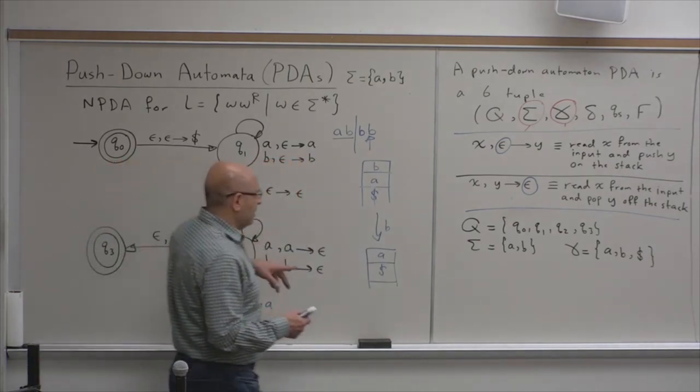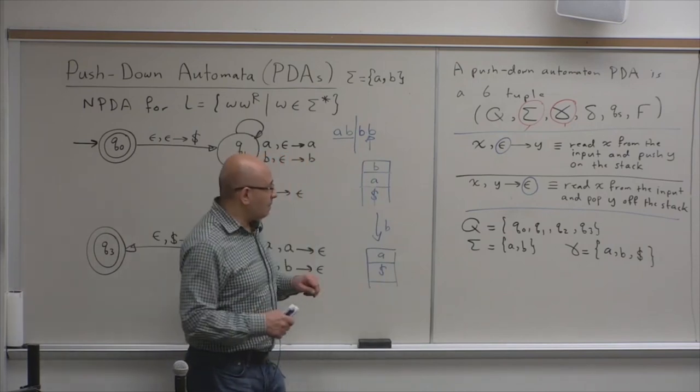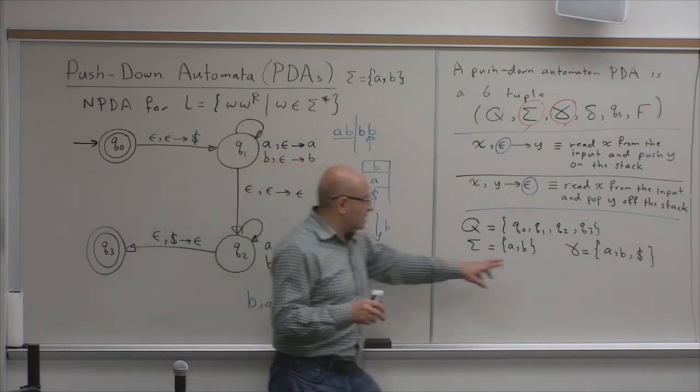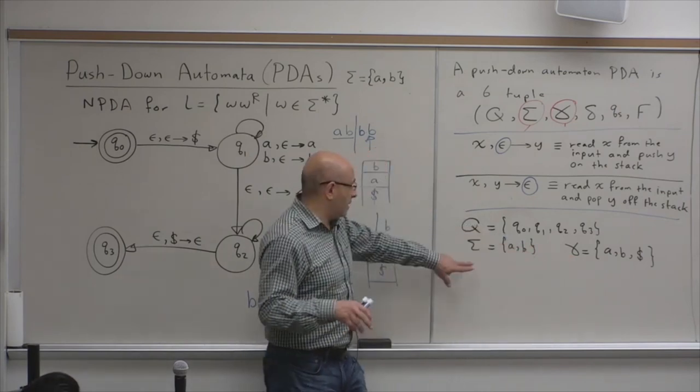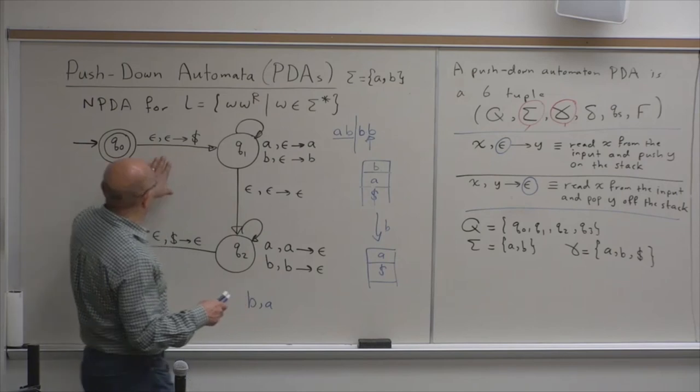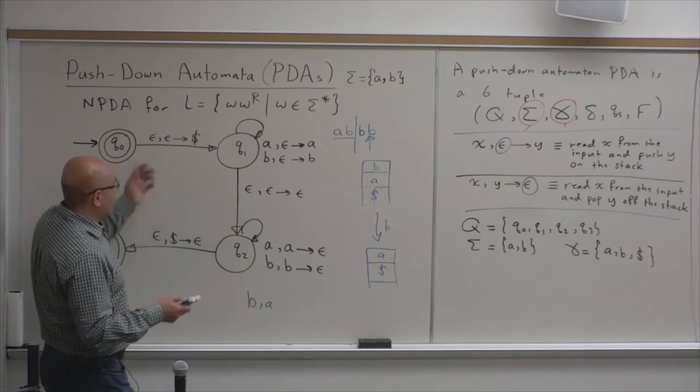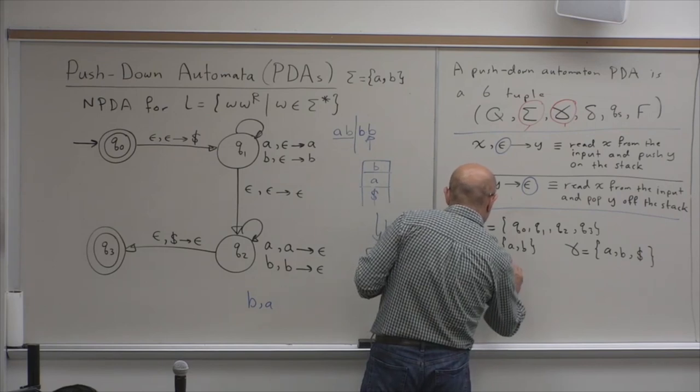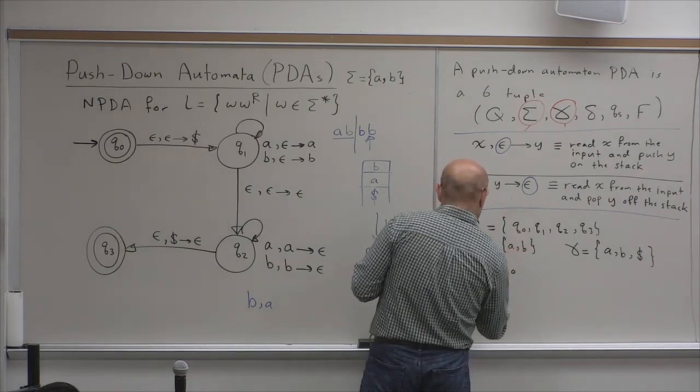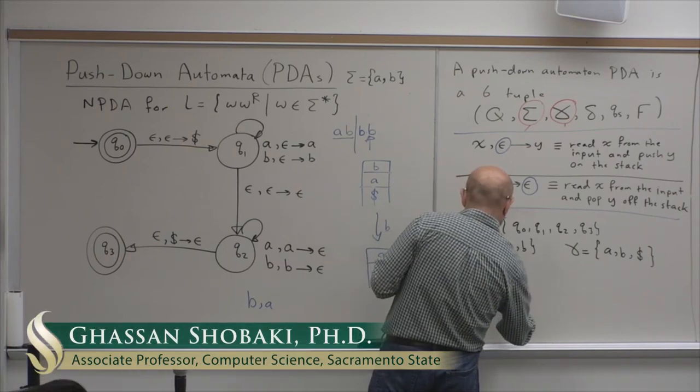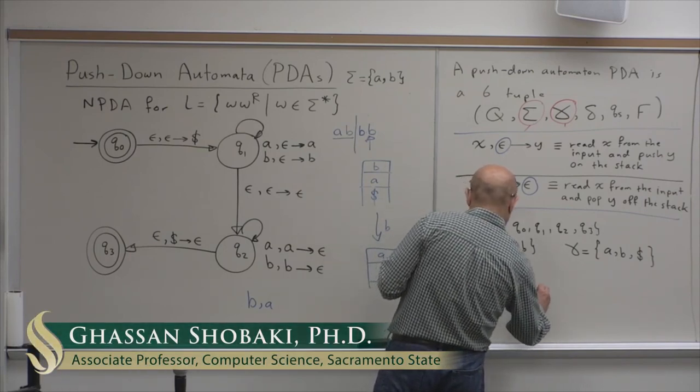So, you can put anything on the stack in general. But, I don't think we will see examples of that. In fact, we will not see very many examples of PDAs. In general, you can put anything. This alphabet can be totally different than this alphabet in general. And delta is defined by these transitions. And Qs is equal to Q0. And F is equal to what? The set of states Q0 and Q3.